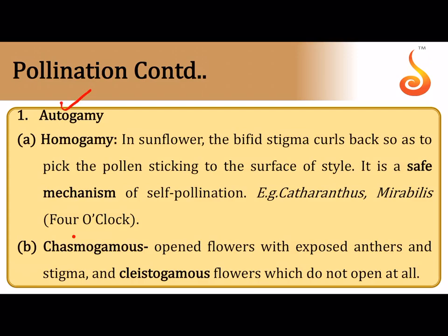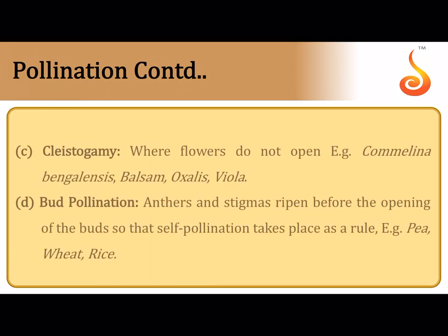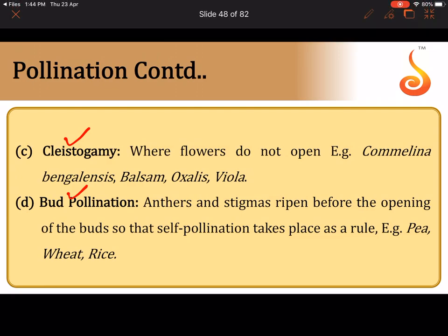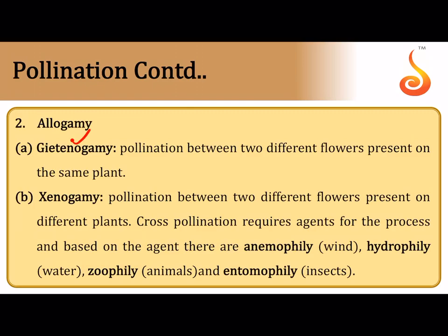If pollination happens within the same flower it is called autogamy. If a flower opens and its anther and stigma are exposed, it is chasmogamous. If pollination happens in the bud condition — where the anther dehisces while the flower is still closed and falls onto the stigma — it is called cleistogamy. The flower does not open at all; inside the bud, the anther dehisces and the pollen falls on the stigma.